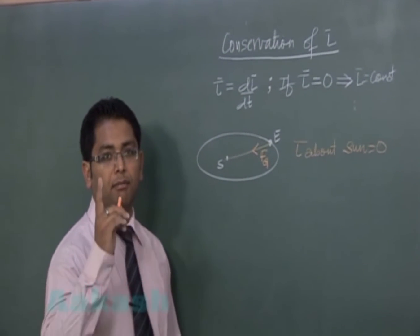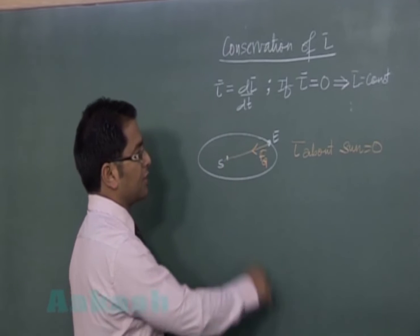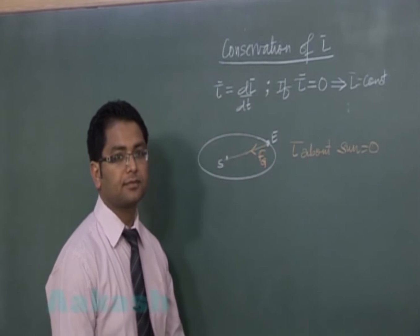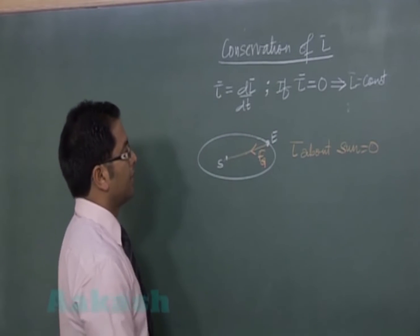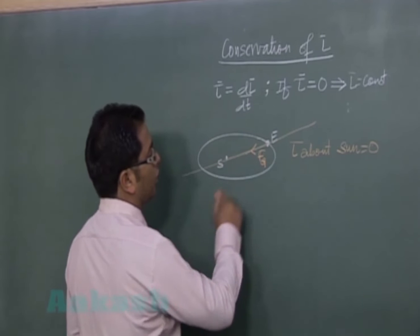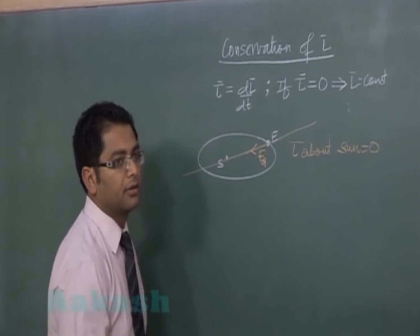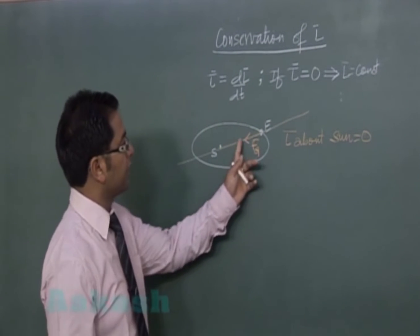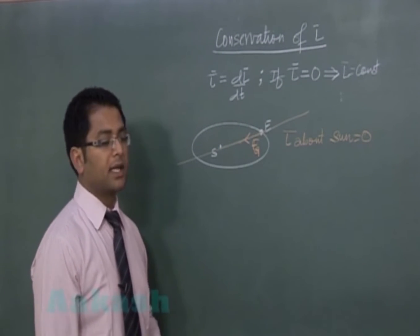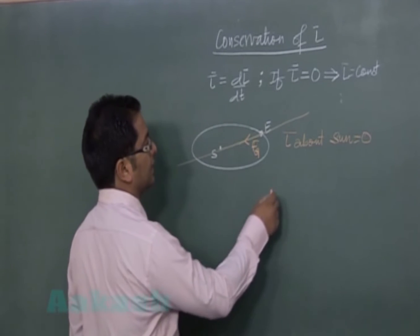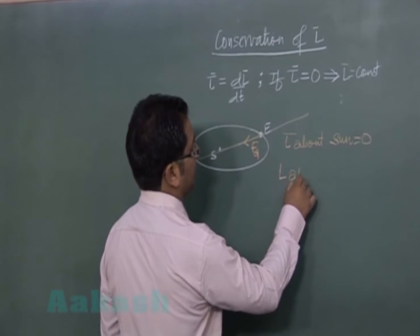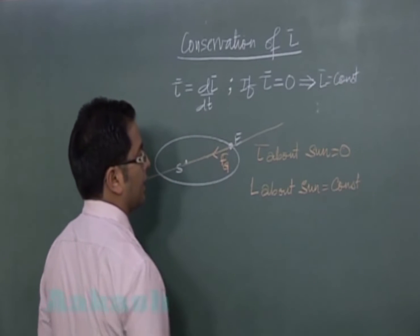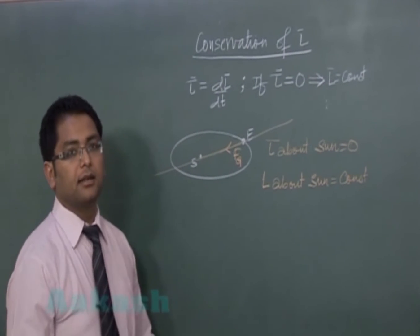But be careful — about other points, the torque of this force is not zero. Any point lying on this line, the torque due to this force would be zero. In other words, angular momentum would be conserved about any point on this line. We concentrate on the Sun, so angular momentum about the Sun will be constant.